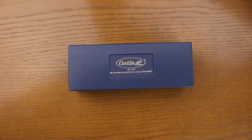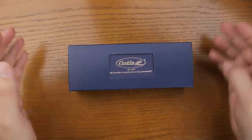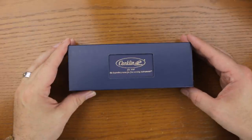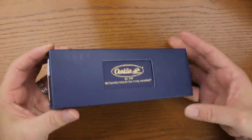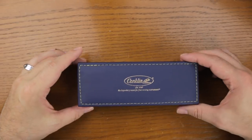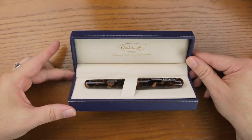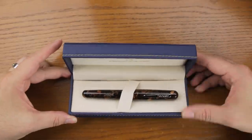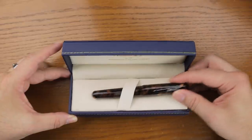Alright, so here's the box for the Conklin All-American Brownstone. It's your standard Conklin box. There's nothing super exciting about it. It's got a blue sleeve. It is a nice presentation box. It's got this faux felt in here.